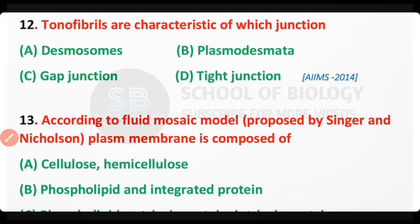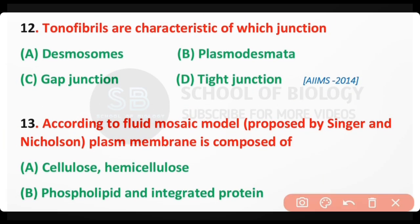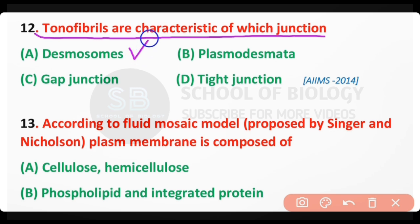Question number twelve: Tonofibrils are the characteristic feature of which junction? Options: desmosomes, plasmodesmata, gap junction, or tight junction. The correct answer is option A. Tonofibrils are cytoplasmic structures that are associated with desmosomes.